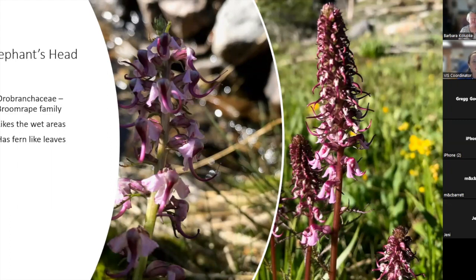Elephant's head is in the broomrape family and its leaves look very fern-like, almost a reddish brownish green color. It definitely likes the boggier, wetter areas, and like the paintbrush, its roots parasitize other plants to help get nutrients.